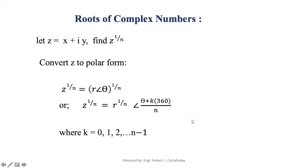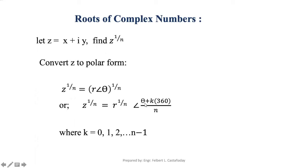For the roots of complex numbers, let z equal x plus iy. To find z raised to 1 over n, first convert the complex number to polar form to determine r and theta. Then z raised to 1/n equals the modulus raised to 1/n, with the argument being (theta plus k times 360) over n, where k is 0, 1, 2, up to n minus 1.